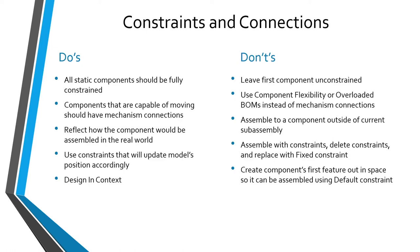Any component that isn't capable of moving — if it's static — should be fully constrained with no degrees of freedom remaining. A corresponding don't: some people leave the first component unconstrained. You can tell it's unconstrained because it will have an empty box glyph next to it in the model tree, and all other components will have a double empty box, indicating they are assembled to an under-constrained component. Most of the time, you can use the default constraint for your first component.